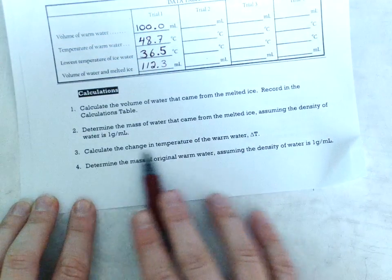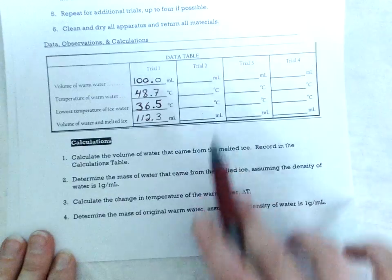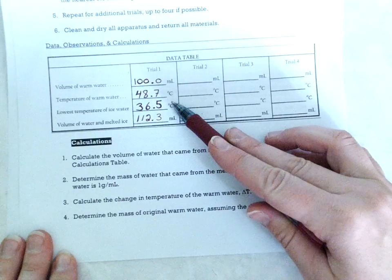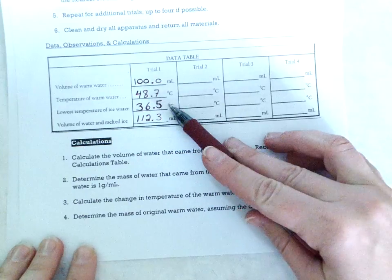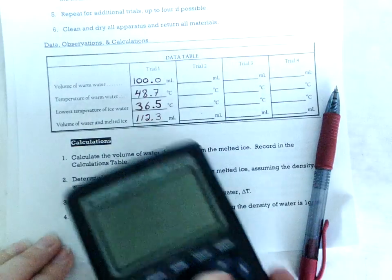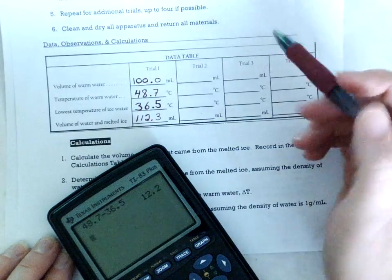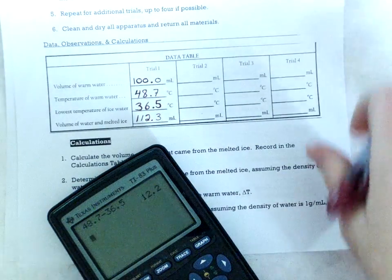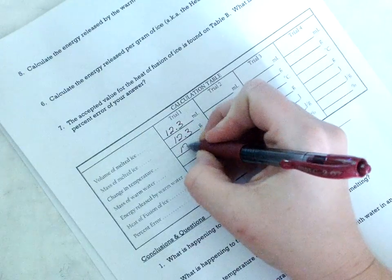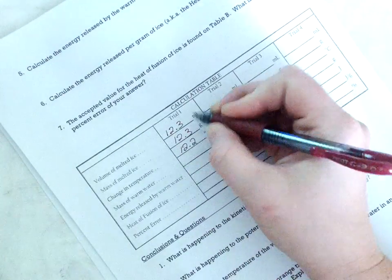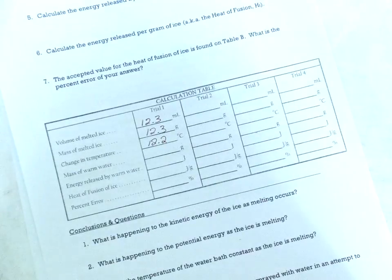Now we need this in grams because our Q equations use mass not volume. Question three says calculate the change in temperature. So clearly you're just going to subtract your two temperatures. So I'm going to do 48.7 minus 36.5. And 12.2 is my temperature change for this example. Gosh I wish these weren't so similar. That's just a coincidence.